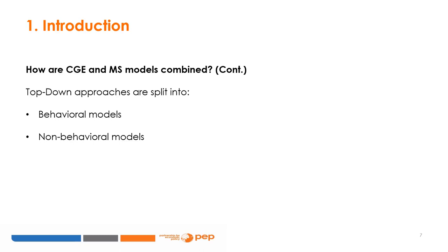The top-down approaches are split into a behavioural approach and a non-behavioural approach. Behavioural CGE-MS models use econometric techniques to allow individuals and households to adjust their behaviour to policy changes. Non-behavioural CGE-MS models do not require econometric methods; thus, individuals do not adjust their behaviour in response to policy changes. The other layered approaches, for example bottom-up and iterative approaches, allow individuals and households to adjust their behaviour to policy changes.